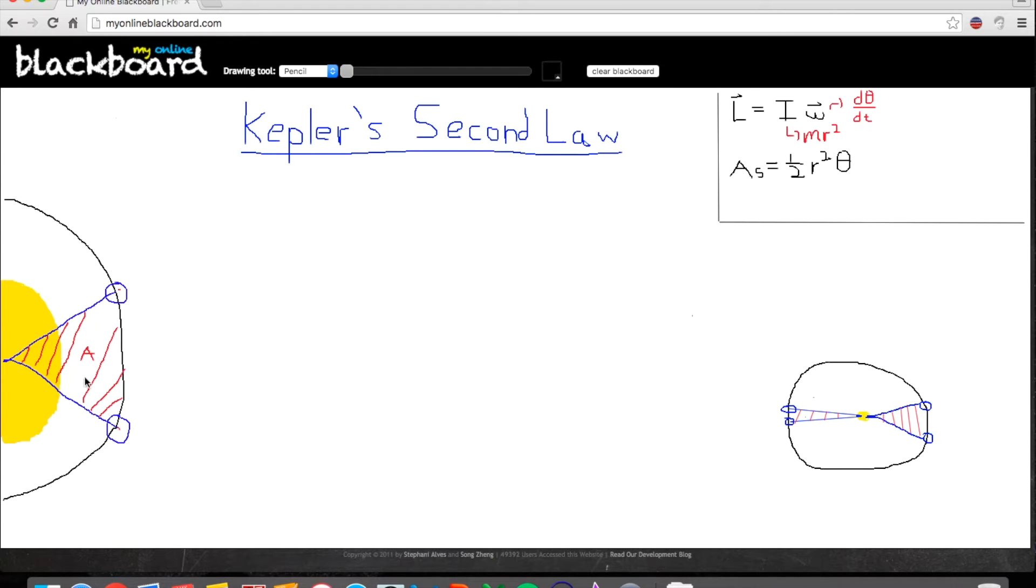But basically, what this is is the description of the momentum it has as an object rotates around a center access point. And in the case of a planet, we have basically a point mass rotating around, as you can see in what actually looks like an egg, rotating around our sun. That was supposed to be a sun.